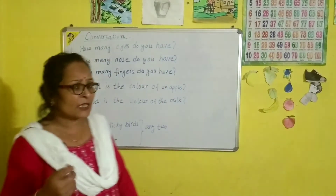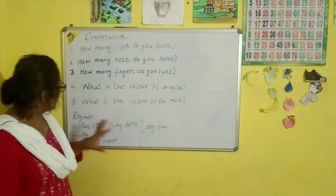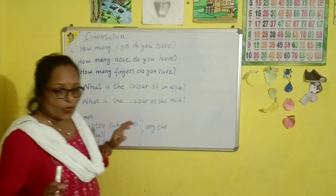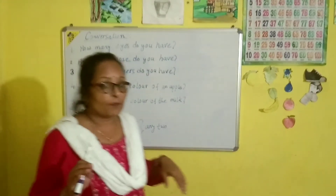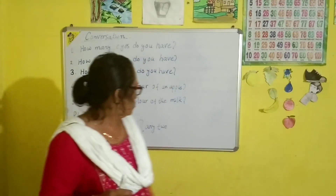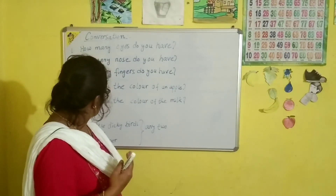And what is next? There are three rhymes: Two Little Dicky Birds, My Ball, and Bits of Paper. You learn these rhymes.